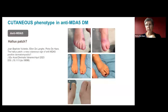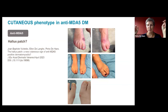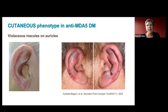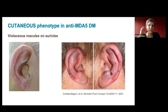We recently described three MDA5-positive patients with a striking purplish patch overlying the hallux — like a Gottron sign on the hallux rather than the elbows and knees. So far, we have only found it in MDA5, though confirmation in a larger group is needed. Additionally, a purplish coloration of the outer ear — the auricles — with sometimes little crusts, has been published by another group in MDA5 patients.